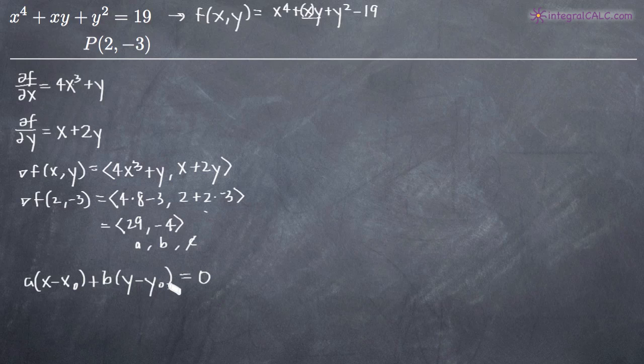This is going to give us the equation of our tangent plane. So obviously, we'll take a and b and then x sub zero and y sub zero are going to come from our point p as positive 2 and negative 3 respectively.